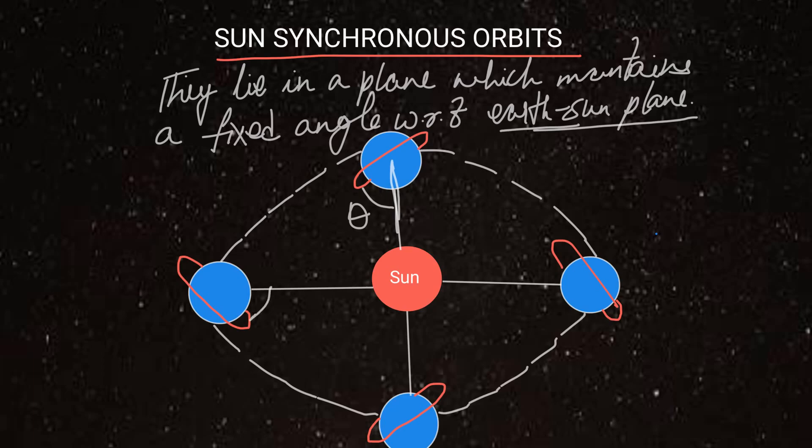If here the angle is theta, then this angle will also be the same, this angle would also be same, and this angle would also be the same. So, a constant angle is maintained between the sun-earth line and the orbital plane of sun-synchronous satellites.